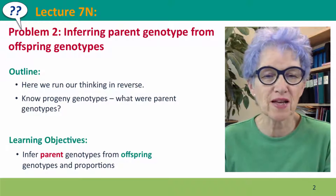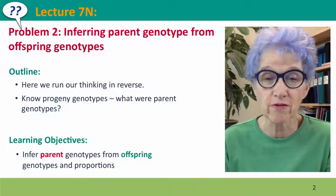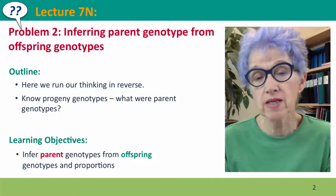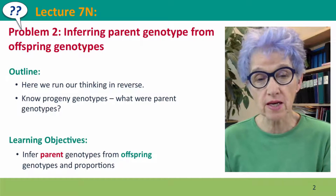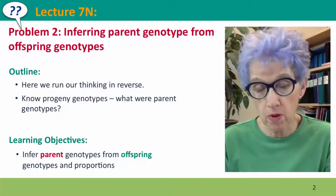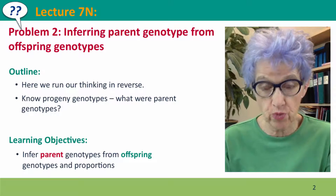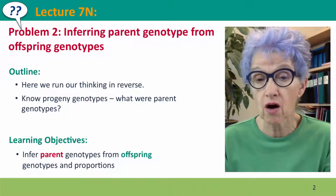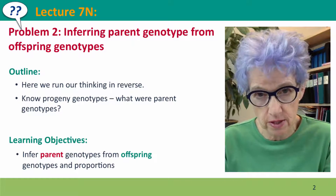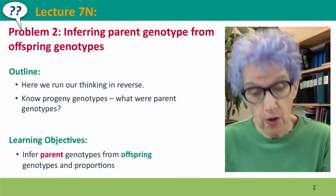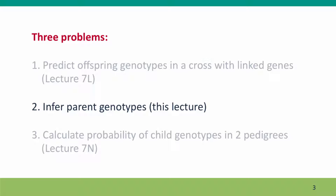Hi, everyone. Welcome to Lecture 7N of Useful Genetics, where we're going to deal with the second of our three problems where we work through one complete generation of inheritance. In this problem, we're going to think in reverse, starting with information about the offspring and thinking backwards to make an inference about a parent genotype.